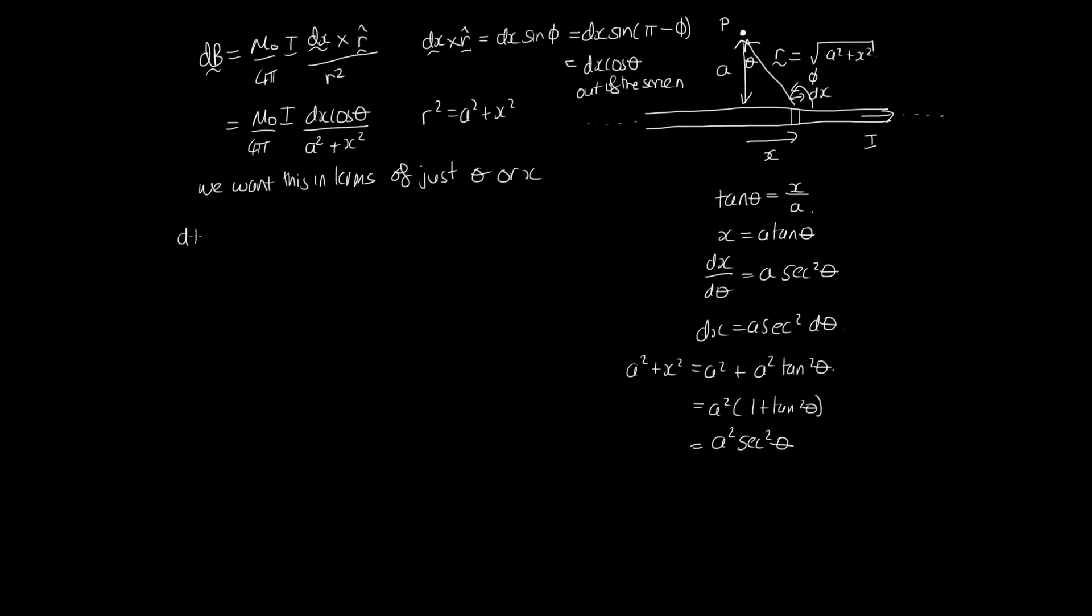We've now got well db is equal to mu naught i over 4 pi times rather than dx now we will replace it with d theta. So we've got a sec squared theta d theta times the cos theta is still there. And then we're dividing by a squared plus x squared which is a squared sec squared theta. So you can see the sec squared theta's cancel out and one of the a's cancels here. And so we've got this is equal to mu naught i over 4 pi times cos theta d theta divided by a.